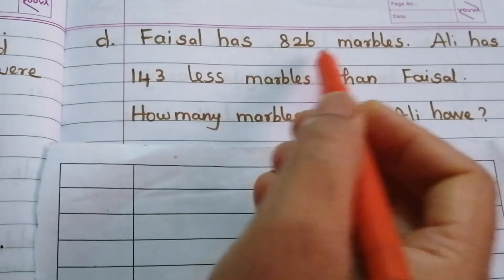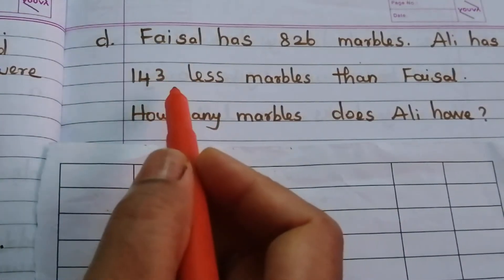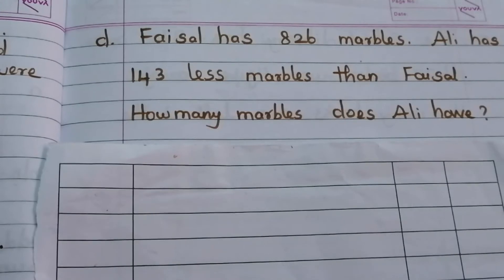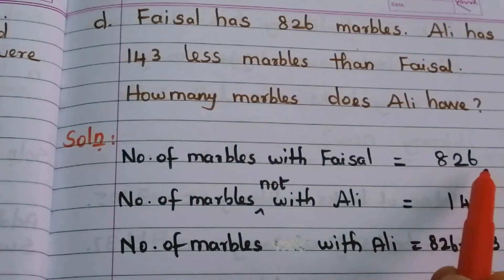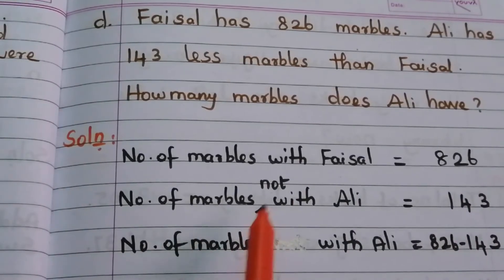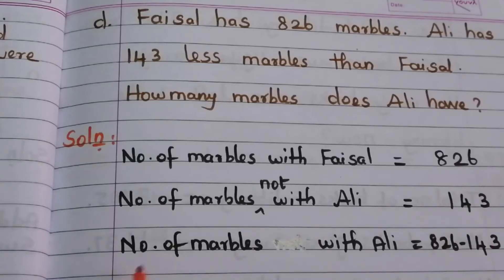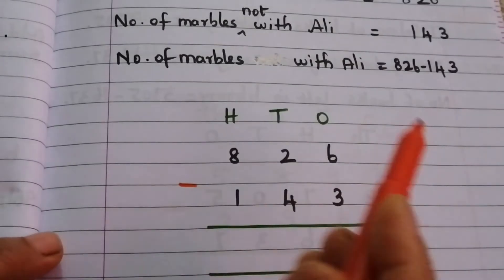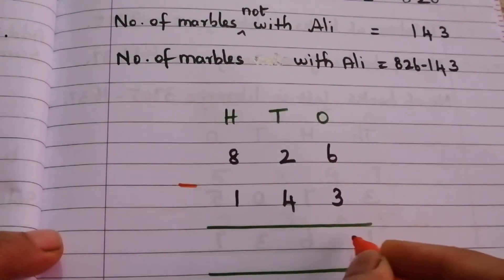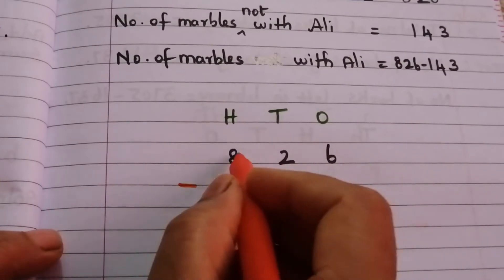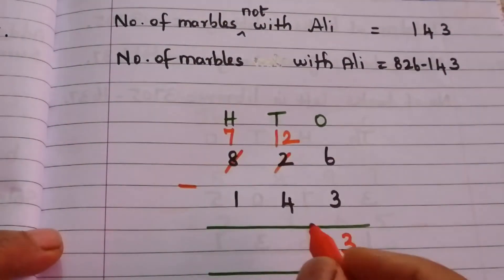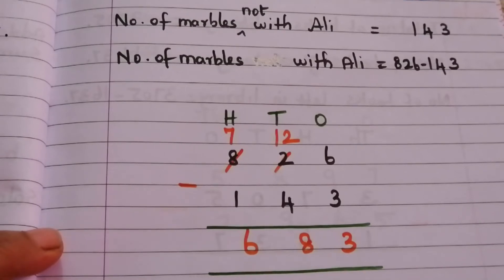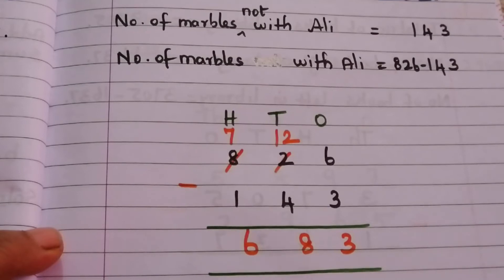D: Faisal has 826 marbles. Ali has 143 fewer marbles than Faisal. How many marbles does Ali have? Write down the given data: marbles with Faisal = 826, marbles fewer = 143. Marbles with Ali = 826 minus 143. Start from ones place: 6 minus 3 = 3. Cannot subtract 4 from 2, so borrow — 12 minus 4 = 8. 7 minus 1 = 6. The answer is 683. Ali has 683 marbles.